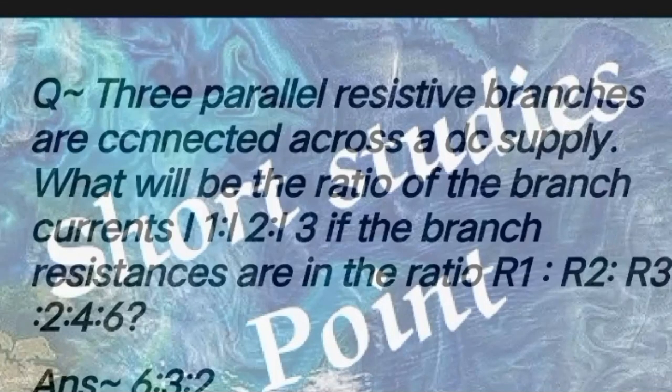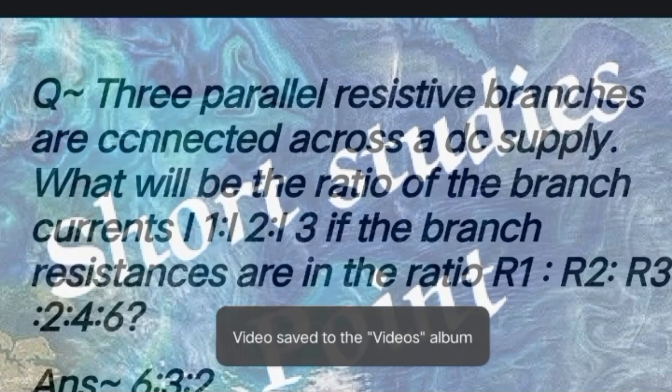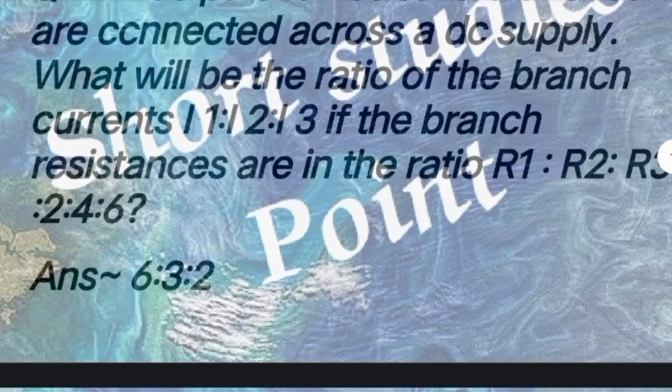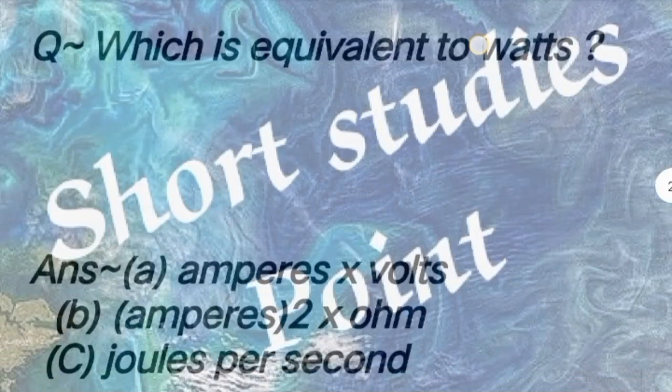Question: Three parallel resistive branches are connected across a DC supply. What will be the ratio of branch currents 1:2:3 if the branch resistances are in the ratio R1:R2:R3? Answer: The ratio is 6:3:2.